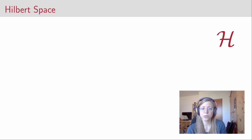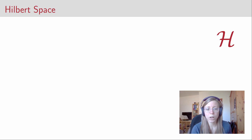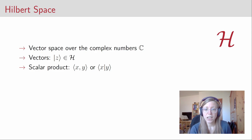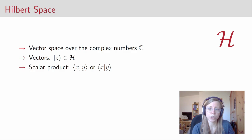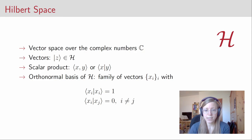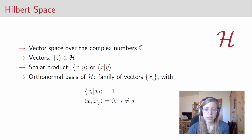The first thing we need to do is talk about the Hilbert space we're working in. We usually denote the Hilbert space by a curly letter H. A Hilbert space is a vector space over the complex numbers C. We use bracket notation to denote vectors in the Hilbert space, and the Hilbert space has a scalar product. An orthonormal basis of a Hilbert space is a family of vectors Xi such that the scalar product of Xi with itself is 1, and the scalar product of two different vectors within the basis is 0.